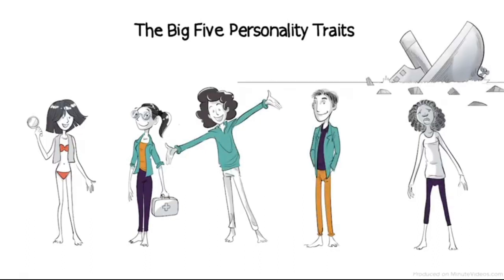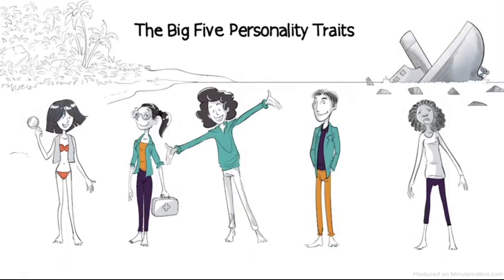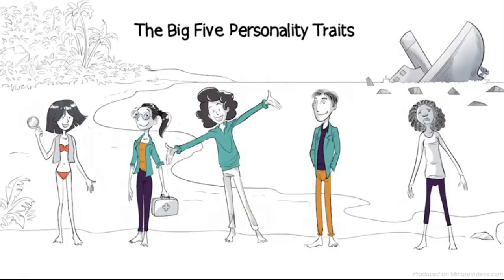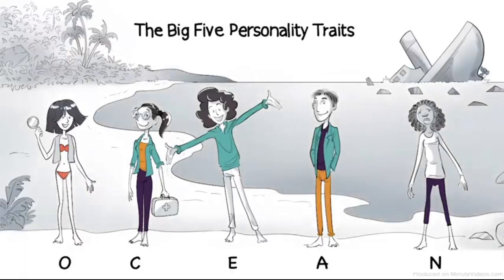In order to understand what each trait really means, let's look at these five characters and how they cope after they wreck their boat and are stranded on an island in the middle of the ocean.